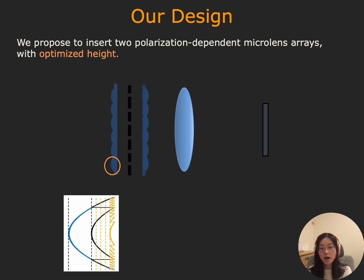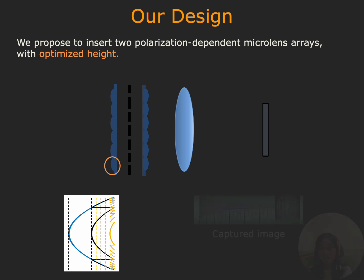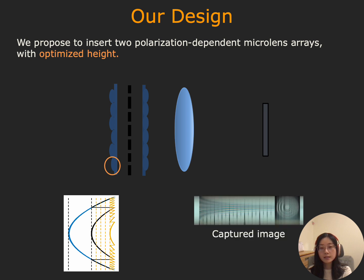Polarization-dependent optical elements are only available in thin formats, and thin face masks cause chromatic aberration. For example, face masks with a certain fixed height produce a greenish image. We therefore optimize the height for each microlens to suppress chromatic aberration. The resulting image has more consistent performance across RGB channels.